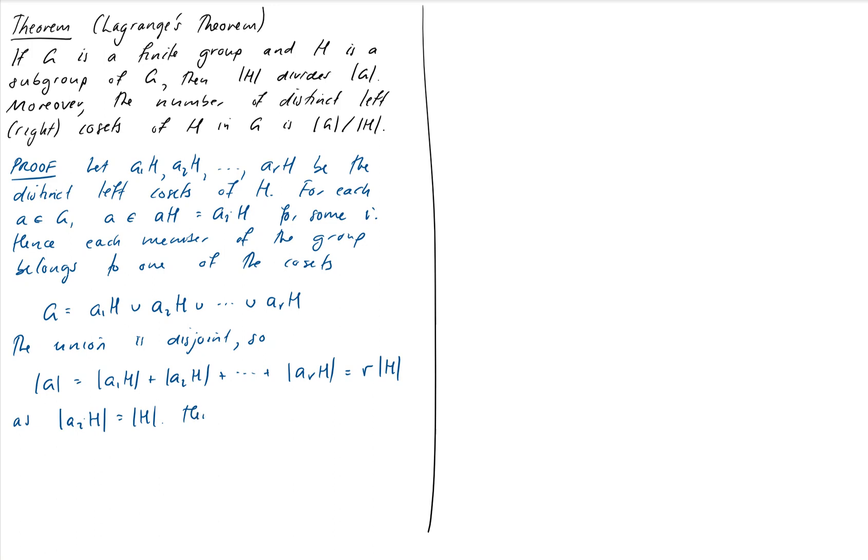Hence, we now have that the order of G is equal to R times the order of H. So this actually is what we wanted. Hence, the order of H divides the order of G, and there are R, which is the order of G divided by the order of H, distinct left cosets of H.